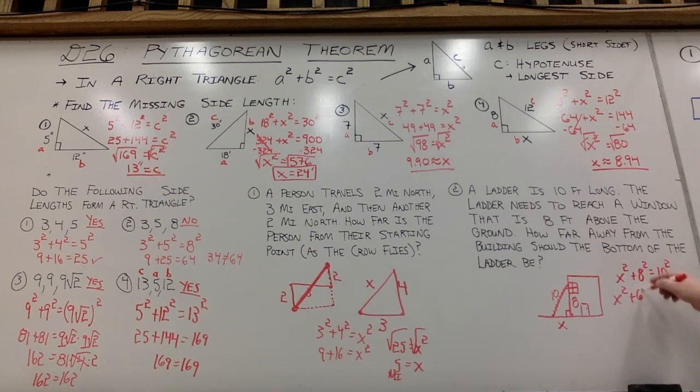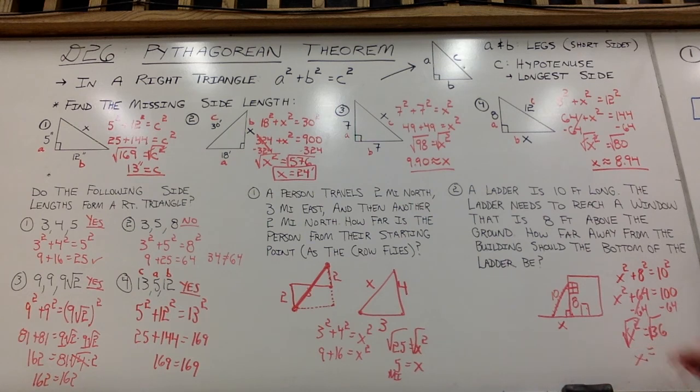So I'm going to say x squared plus 8 squared equals 10 squared. So x squared plus 64 equals 100. Subtract 64 from both sides. I'll have x squared equals 36. Square root both sides. And that missing length there, the base of the ladder, should be 6 feet away from the bottom of the building.